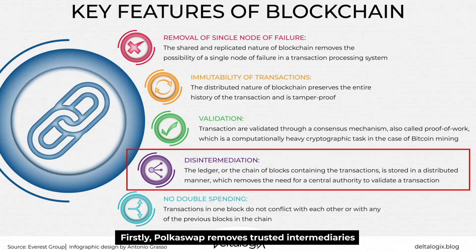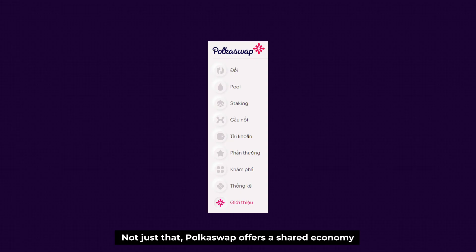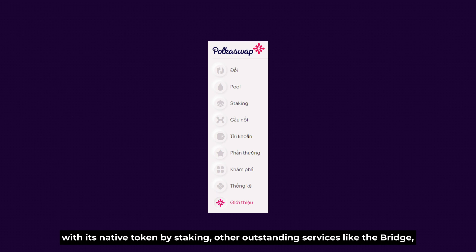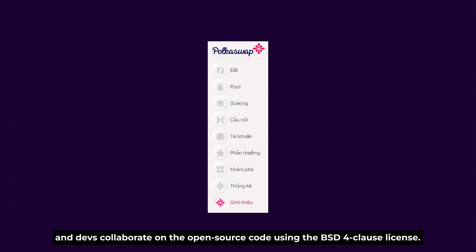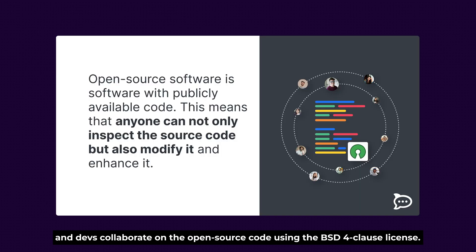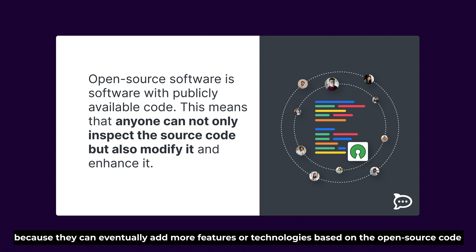Firstly, Polkadot Swap removes trusted intermediaries and provides the opportunity for faster trading, which embraces the key advantages of blockchain. Polkadot Swap also offers a shared economy with its native token through staking, outstanding services like the bridge, and unlimited benefits for users. Moreover, Polkadot Swap is a community project, and devs collaborate on the open-source code using the BST4 clause license. In other words, Polkadot Swap has no certain limit because they can eventually add more features and technologies based on open-source code.